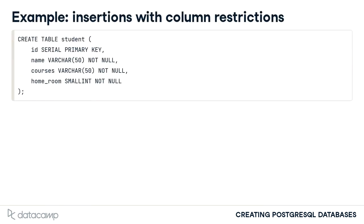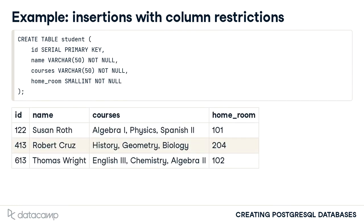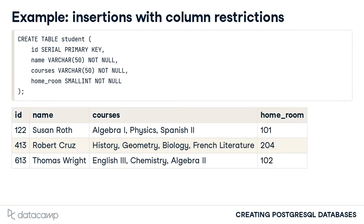Notice the restriction that we placed on the courses column — that the column be no greater than 50 characters in length. If Robert wants to pursue an ambitious course load, including the three courses listed here, as well as French literature and computer science, his entire course list would exceed the column length. It's possible to change the structure of the table to accommodate this by increasing the column character limit or allowing unlimited characters. However, the fundamental problem comes from placing all courses into a single column.